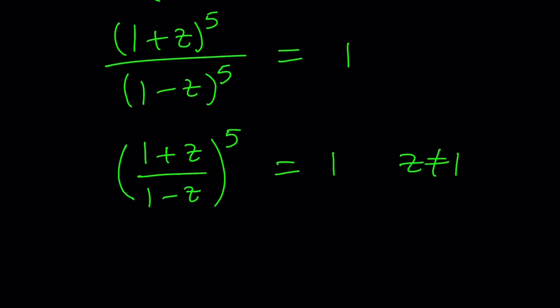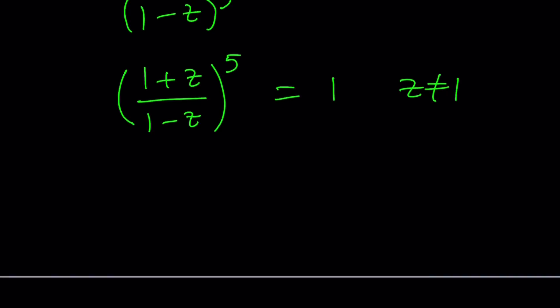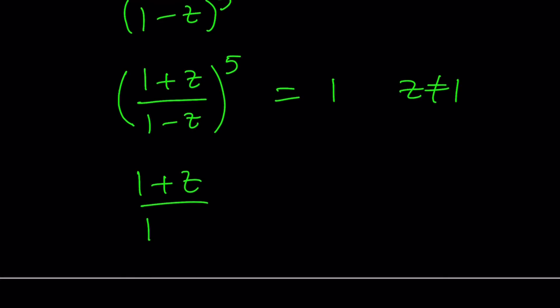We can take the 5th root of both sides. But before we do, because there are 5 fifth roots of a complex number, we can write them in polar form. So let's write 1 in polar form first. To be able to write it, we're basically going to consider the unit circle, 1 unit from the origin.